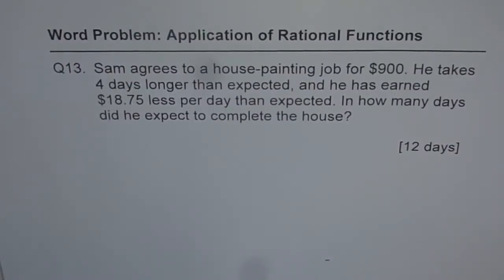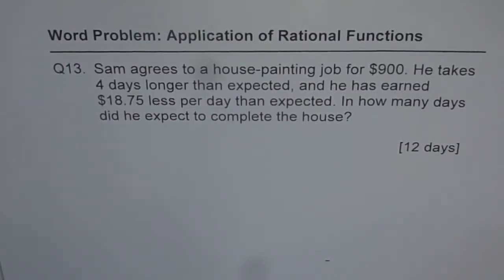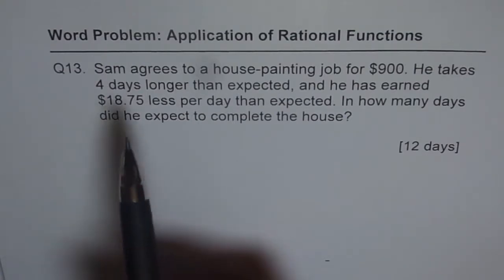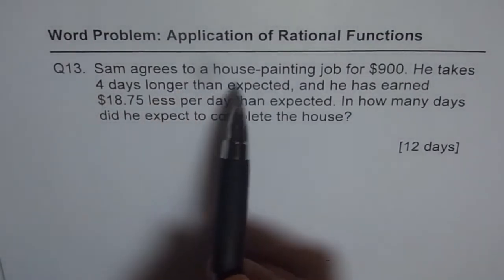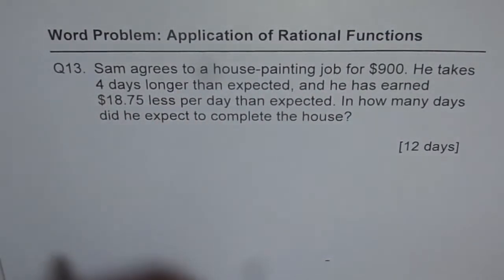Question 13 from the school assignment. Now let me teach you how to write an equation from the word problem, or rather translate word problem into equation and then solve. Question number 13 is: Sam agrees to a house-painting job for $900. He takes 4 days longer than expected and he has earned $18.75 less per day than expected. In how many days did he expect to complete the house?